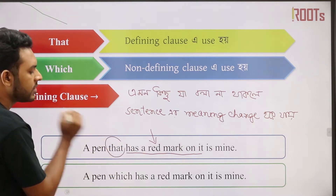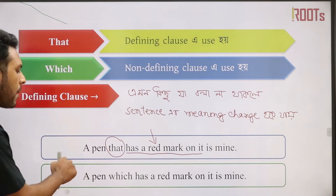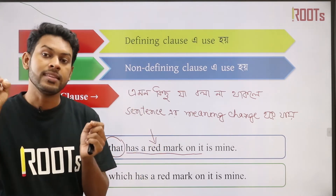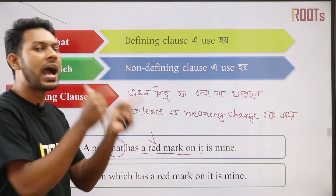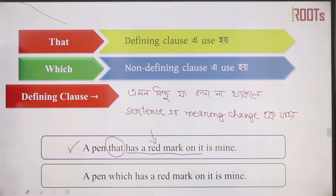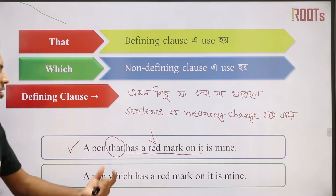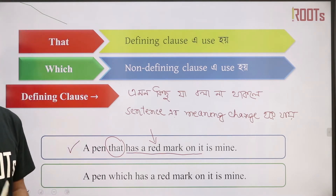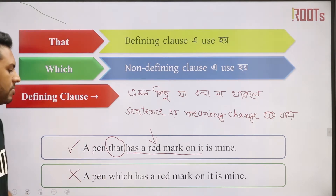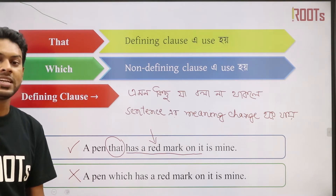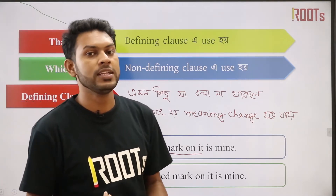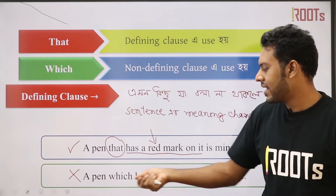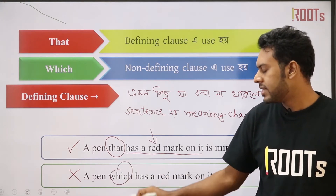This is the defining clause. If you remove it, the meaning will change. That means the pen has a red mark on it — that part is essential. If you don't include that voice, the meaning changes. So this is correct: 'The pen that has a red mark on it is mine.' We are going to use 'that' in a defining clause.